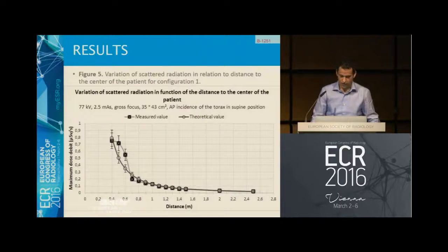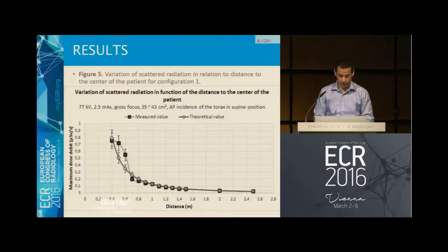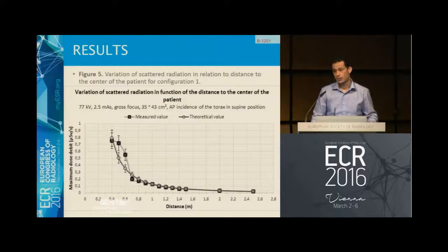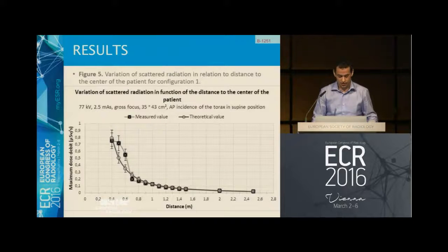We also performed the variation of scattered radiation in relation to distance to the center of the patient for configuration one. Here we have the theoretical value and here the measured value. These differences are hypothesized to relate to the anthropometric characteristics of the patient — the measured value never corresponds exactly to the theoretical value.